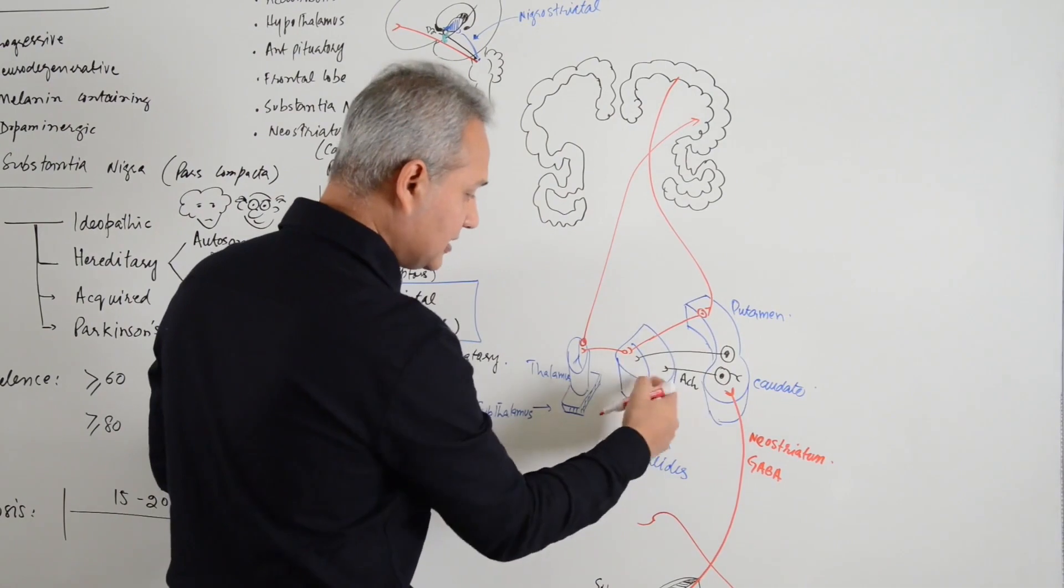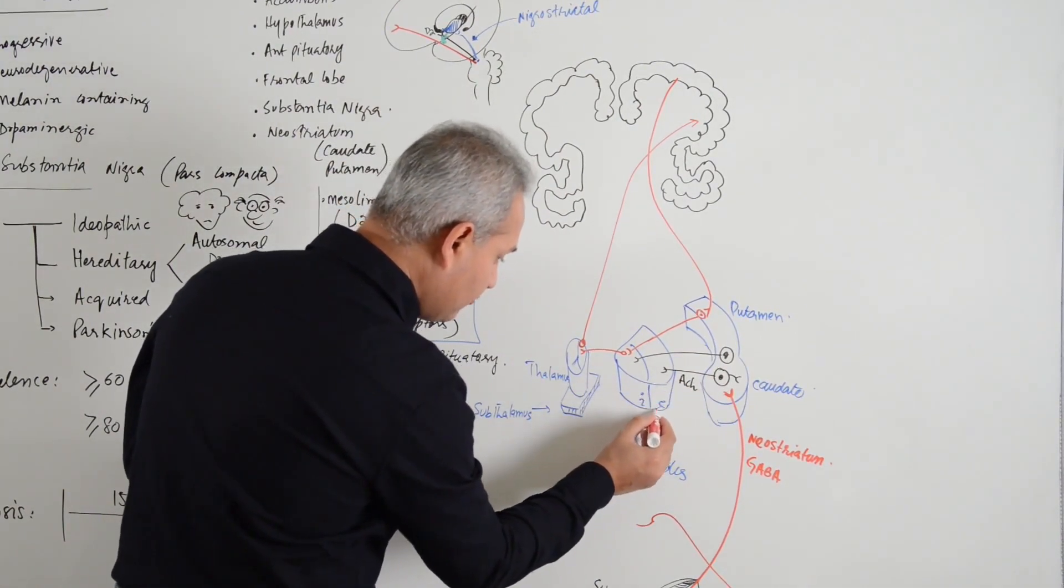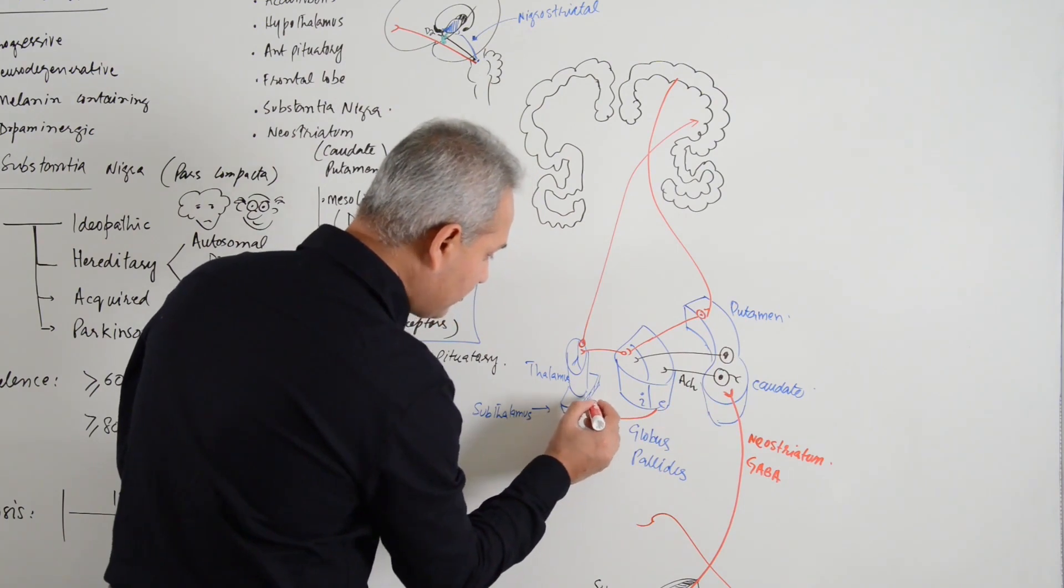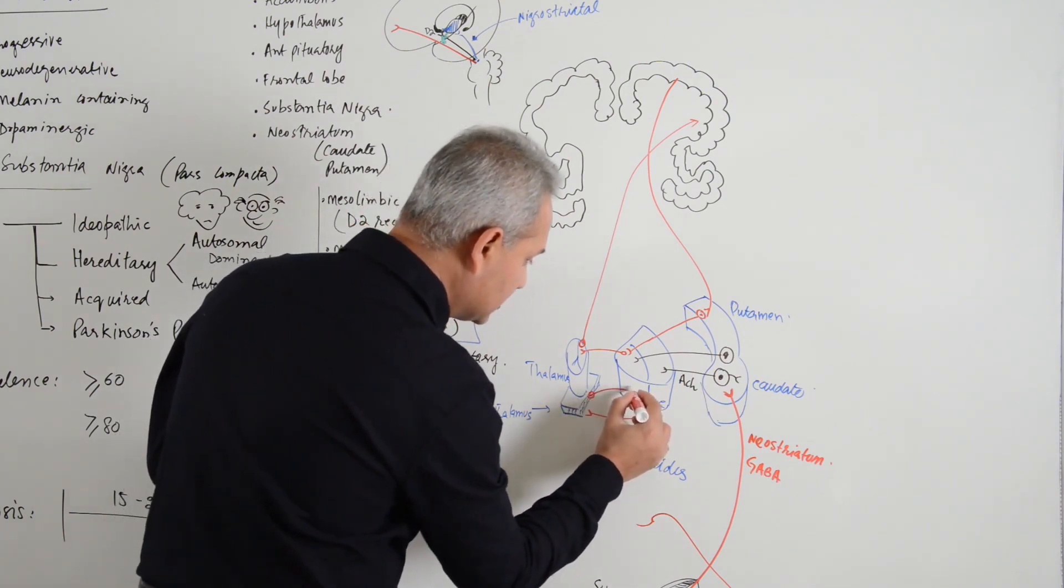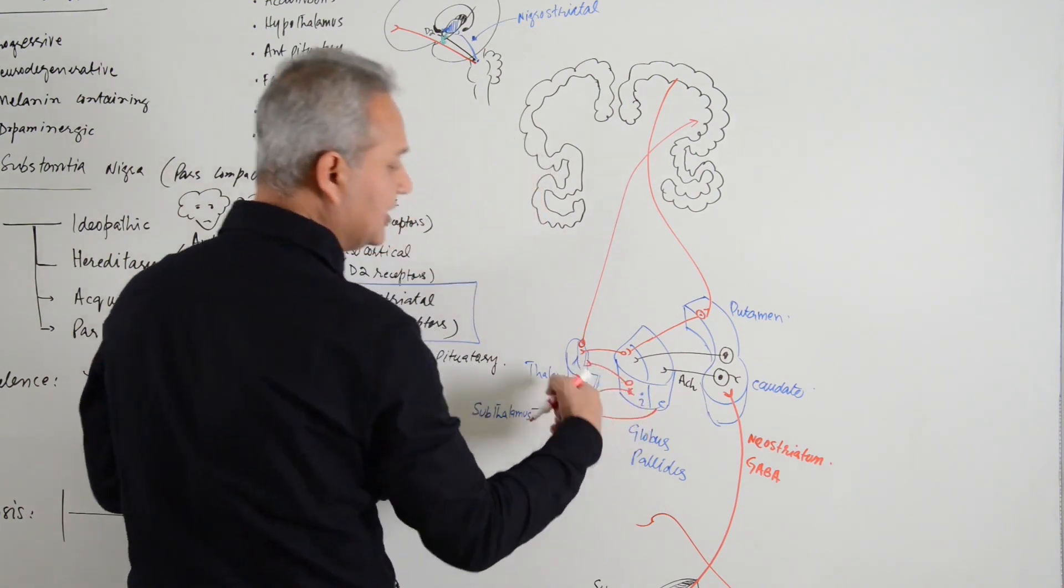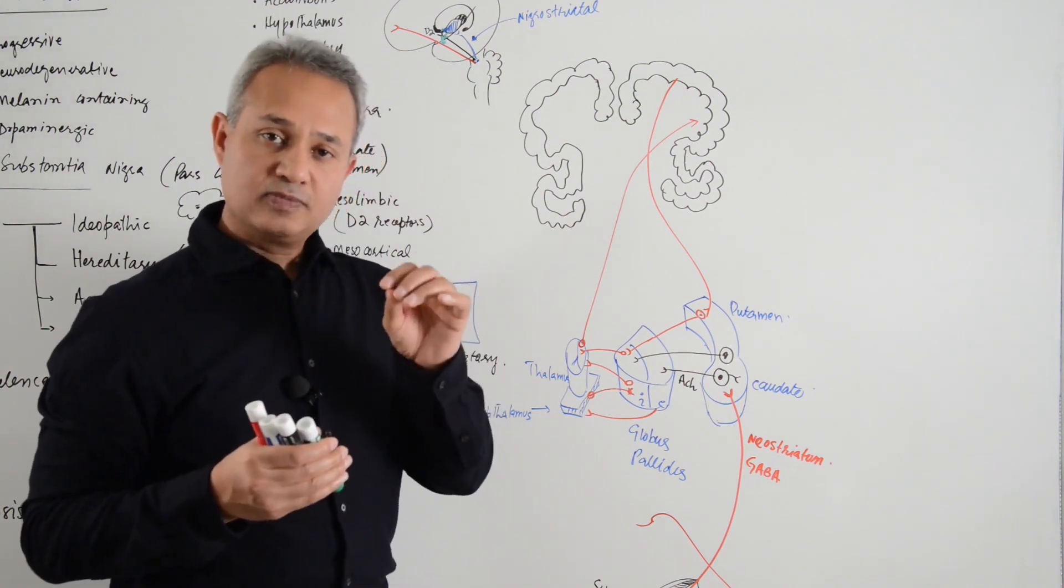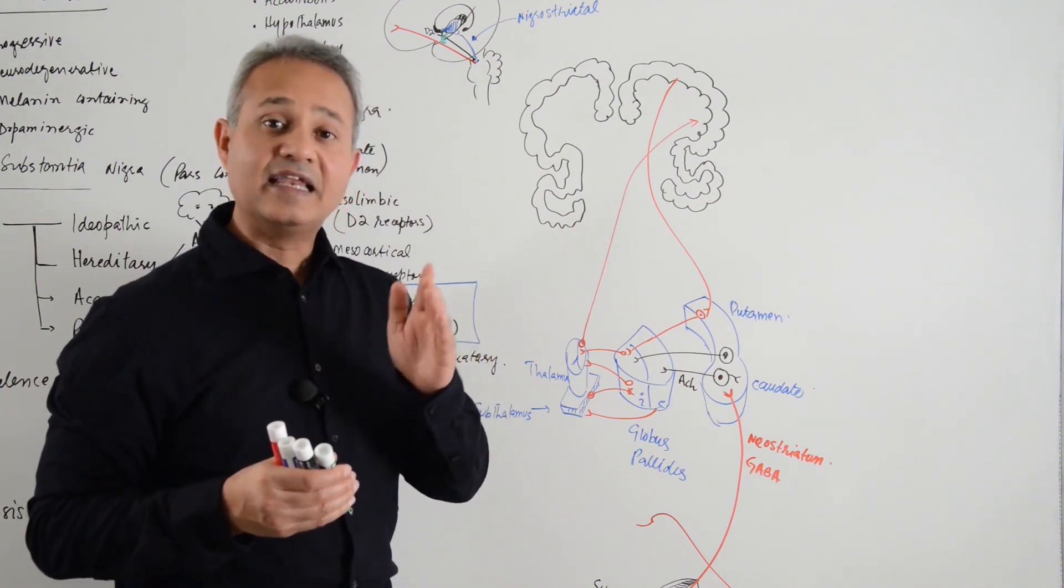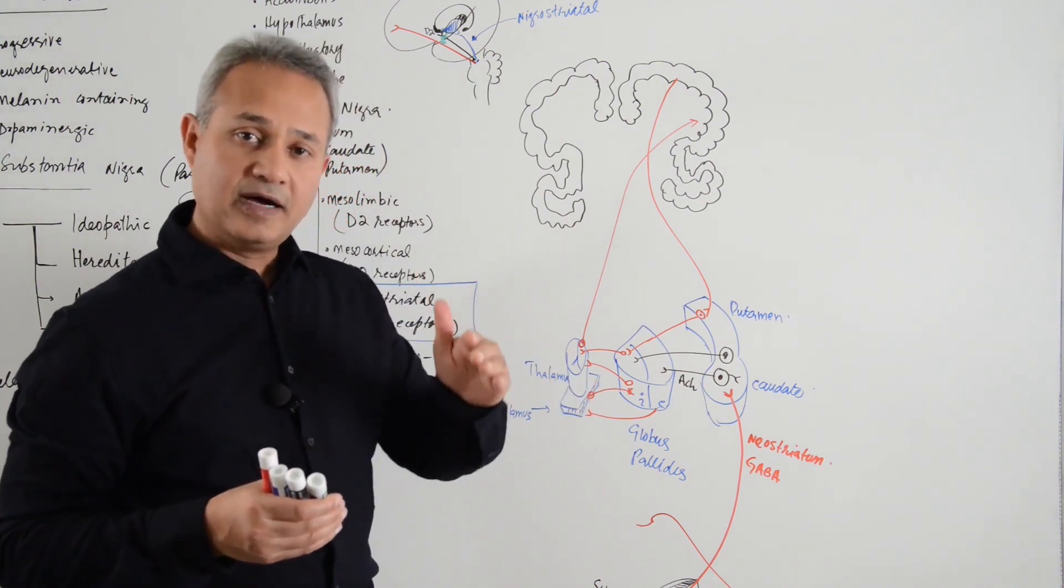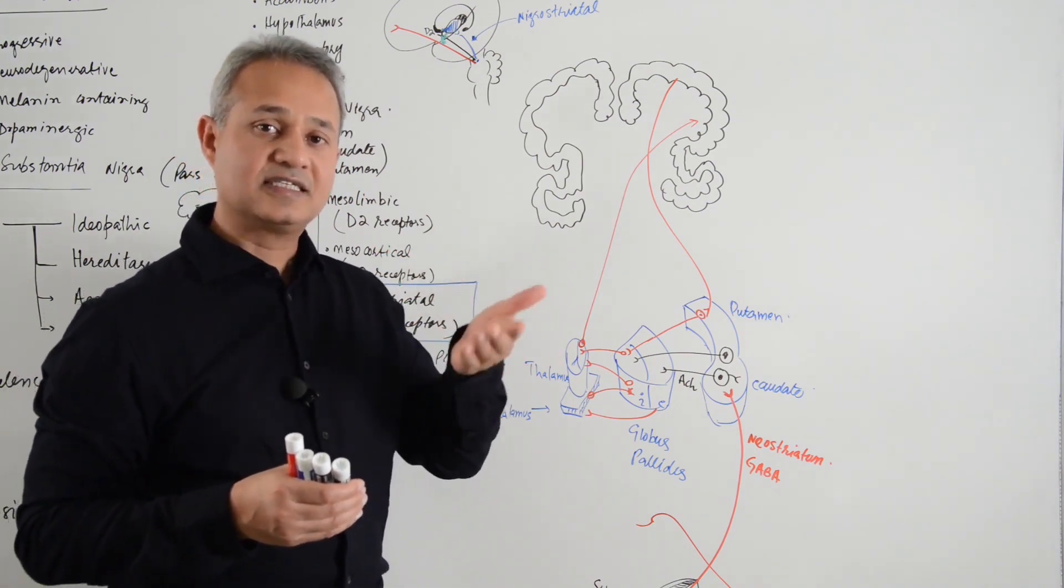In indirect pathway the fibers come out here, then the fibers from the external will go to the subthalamus. From subthalamus the fibers will go to the internus. From internus they would go back to the thalamus and then they would go up. What is the benefit? Globus pallidus internus takes part in indirect pathway. Indirect pathway causes suppression. Direct pathway causes excitation.